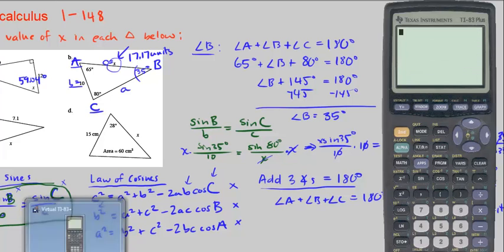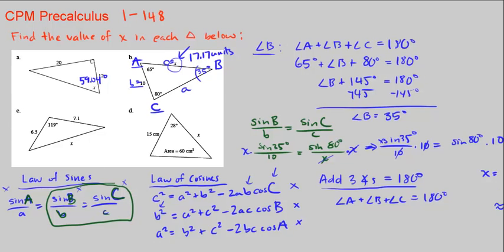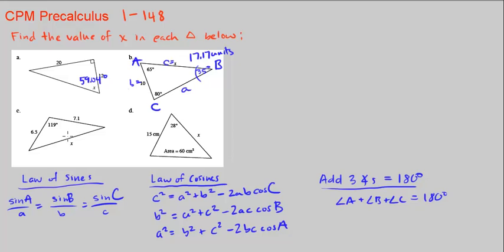Now let's move on to part C. Part C is asking us what this side is. We're given two sides and one angle. Let's label our triangle A, B, C — once you label it, be consistent: big A pairs with little a, big B with little b, big C with little c. We know angle A, side B, and side C. The law of sines doesn't really help us because we don't know side A, angle B, or angle C. We also can't use the angle sum since we have two unknown angles.